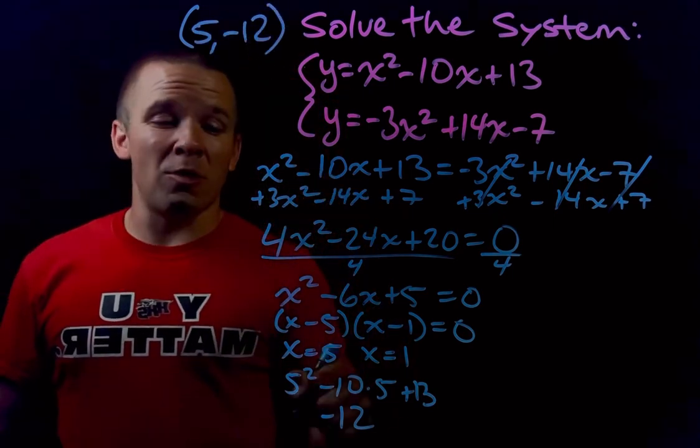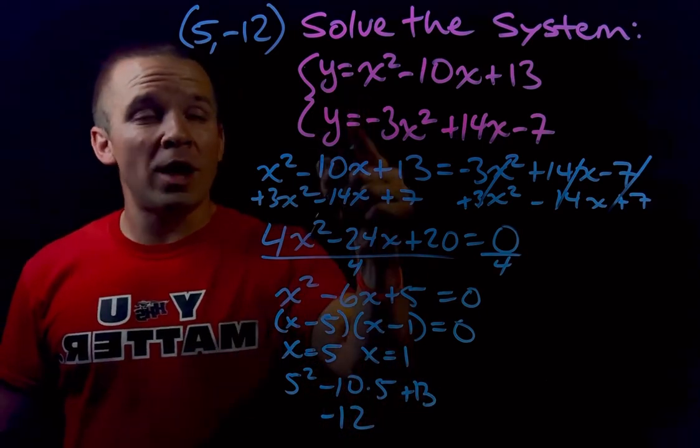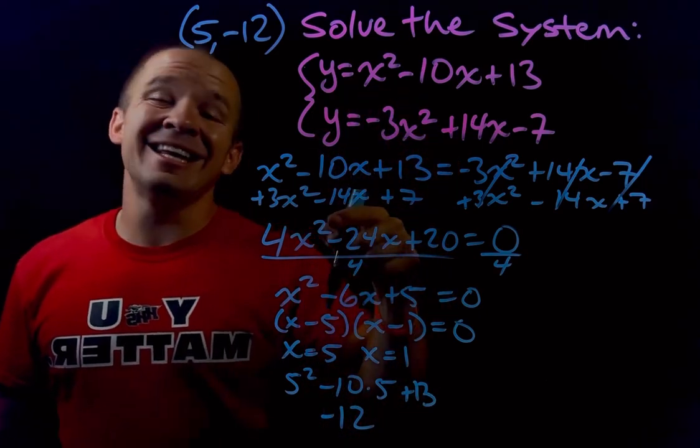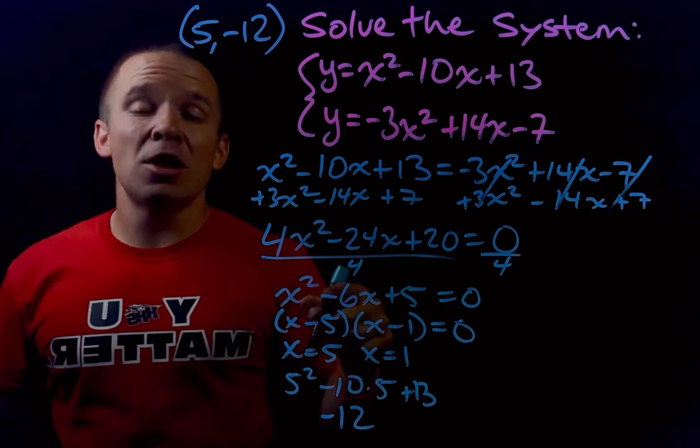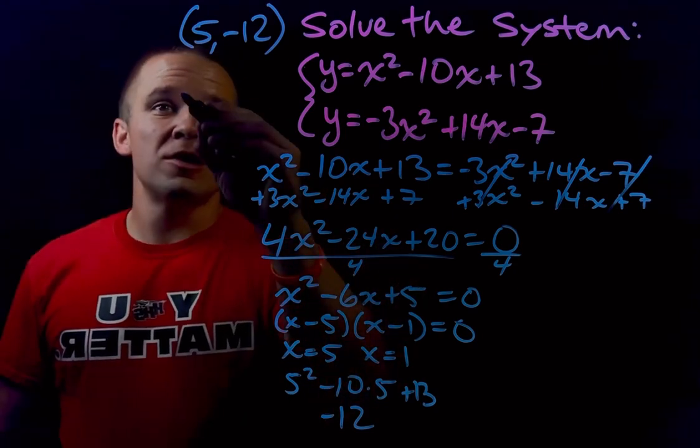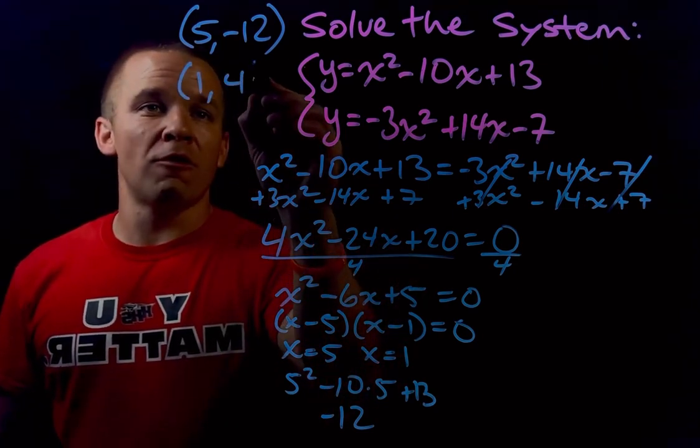Now for my other one, I'll do the same thing but with x equals 1. If I plug 1 in, I get 1 minus 10 is negative 9 plus 13 which gives me positive 4. So my other solution is (1, 4).